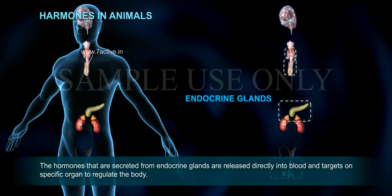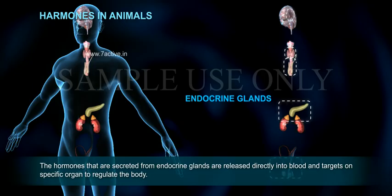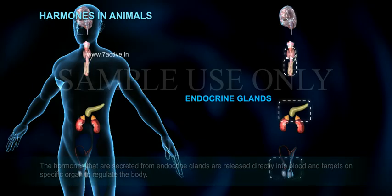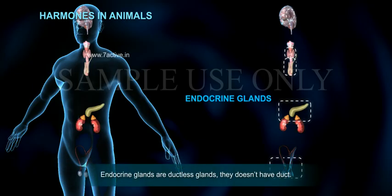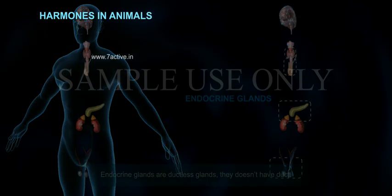The hormones secreted from endocrine glands are released directly into the blood and target specific organs to regulate the body. Endocrine glands are ductless glands — they do not have a duct.